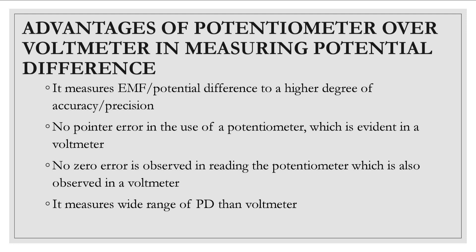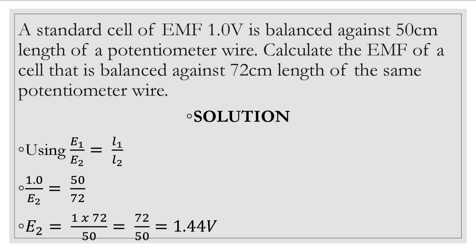These are some of the advantages of using a potentiometer over a voltmeter. Then finally there is a question here that we are asked to find the emf of a cell that is balanced. In the question they said the standard cell of emf one volt is balanced against 50 cm length of a potentiometer wire, then we're asked to calculate the emf of a cell that is balanced against 72 cm length of the same potentiometer wire. The formula is straightforward: e1 over e2 equal to l1 over l2 where e1 and e2 are the emfs and l1 and l2 is the balance length. So if we substitute from the question we'll have that e2 is equal to 1.44 volts.